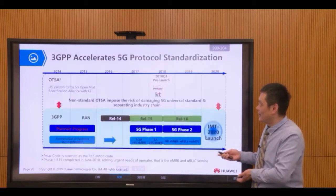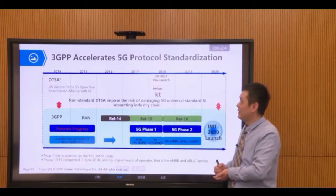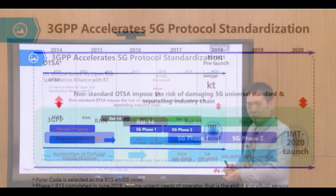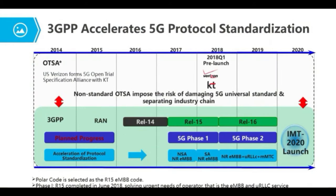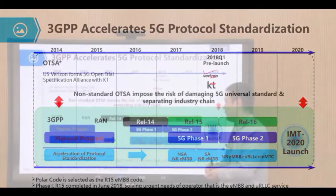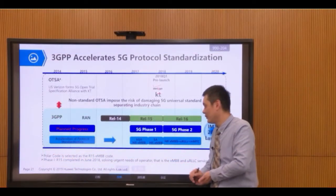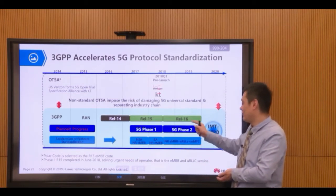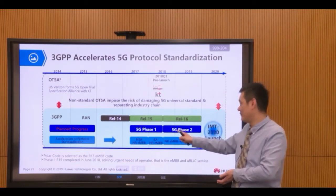Under the pressure from OTSA, 3GPP accelerated its steps for protocol standardization. The original plan was for 5G to use two versions — Release 15 and Release 16, also called 5G Phase 1 and 5G Phase 2 respectively.